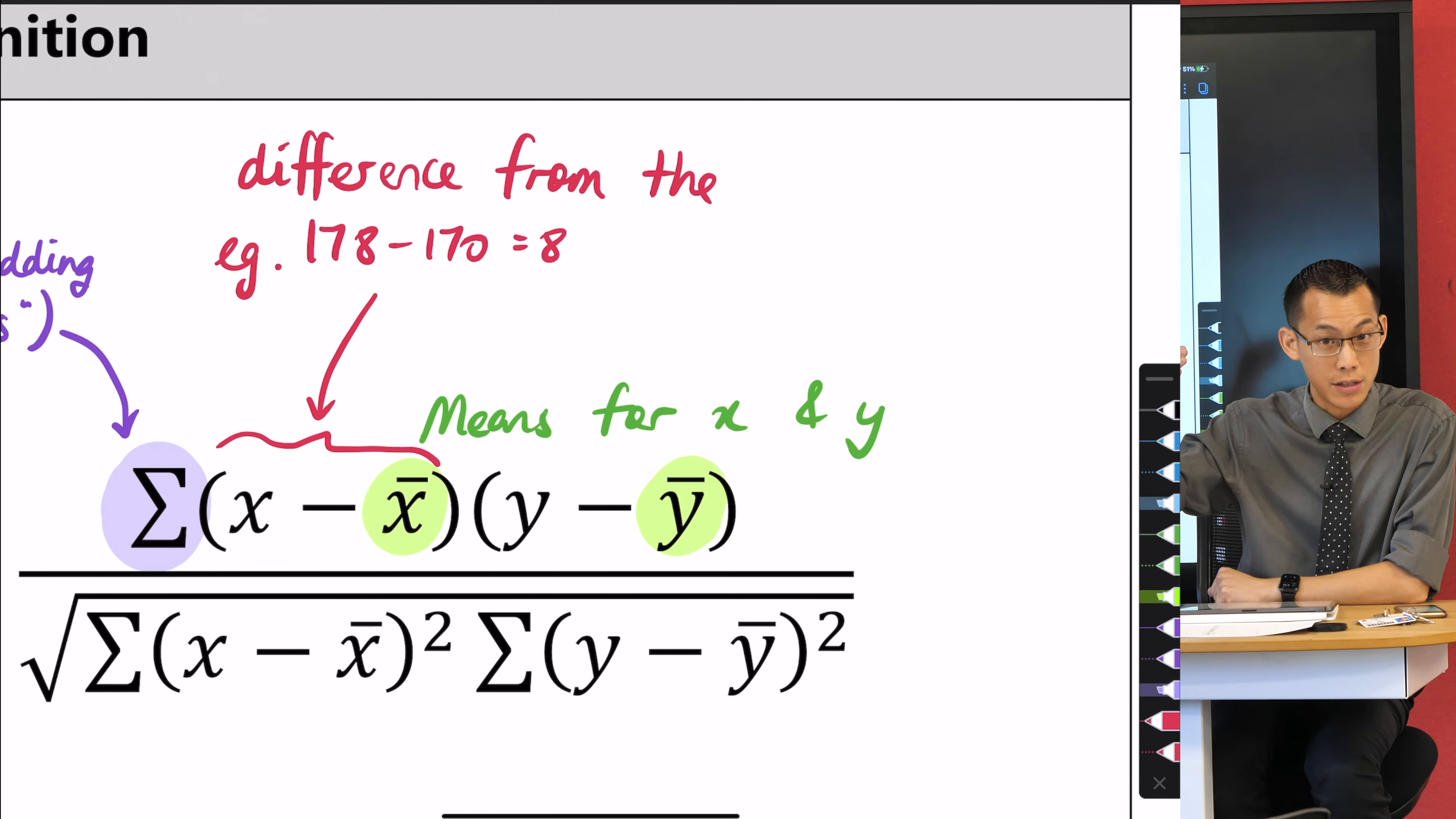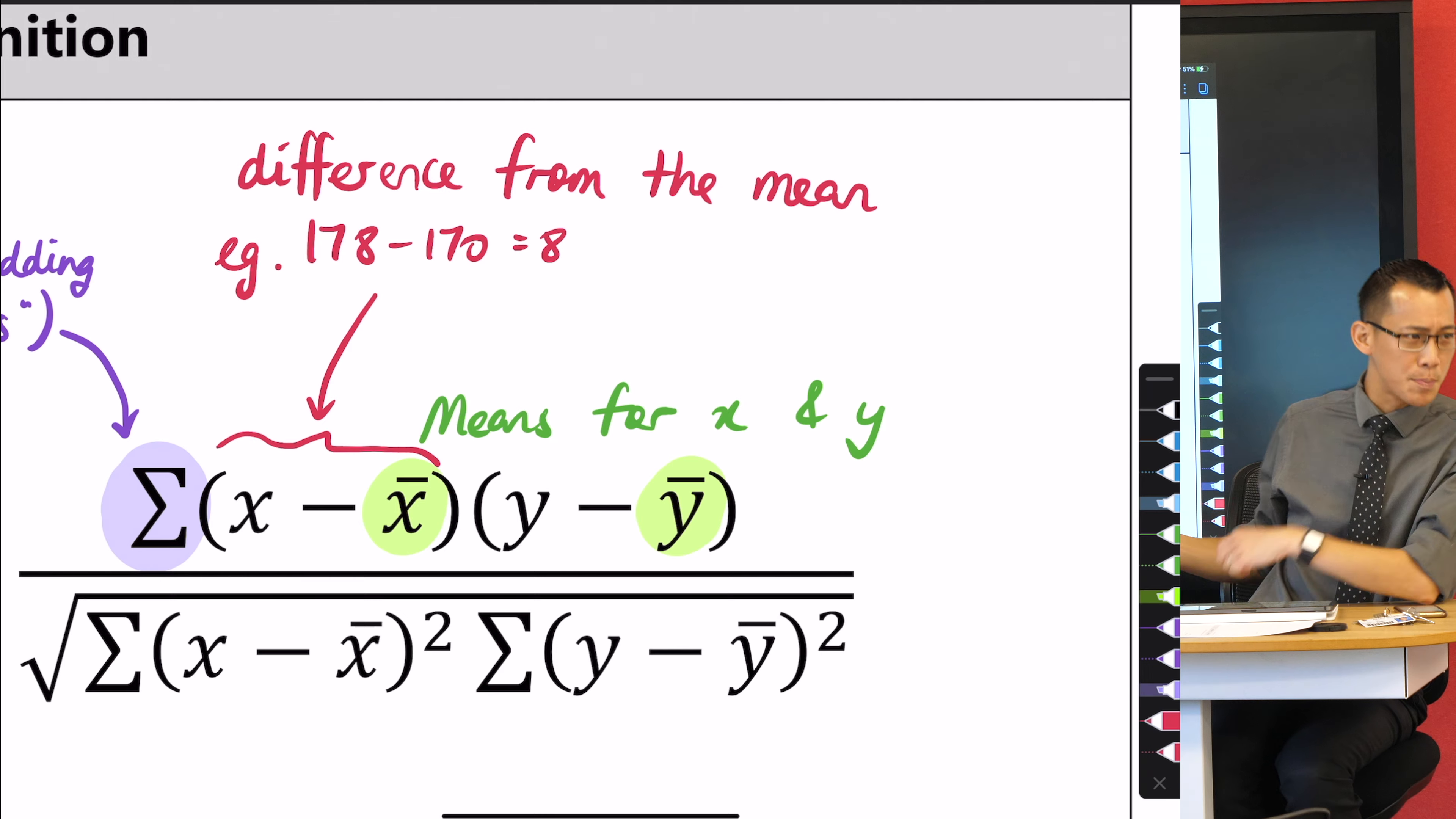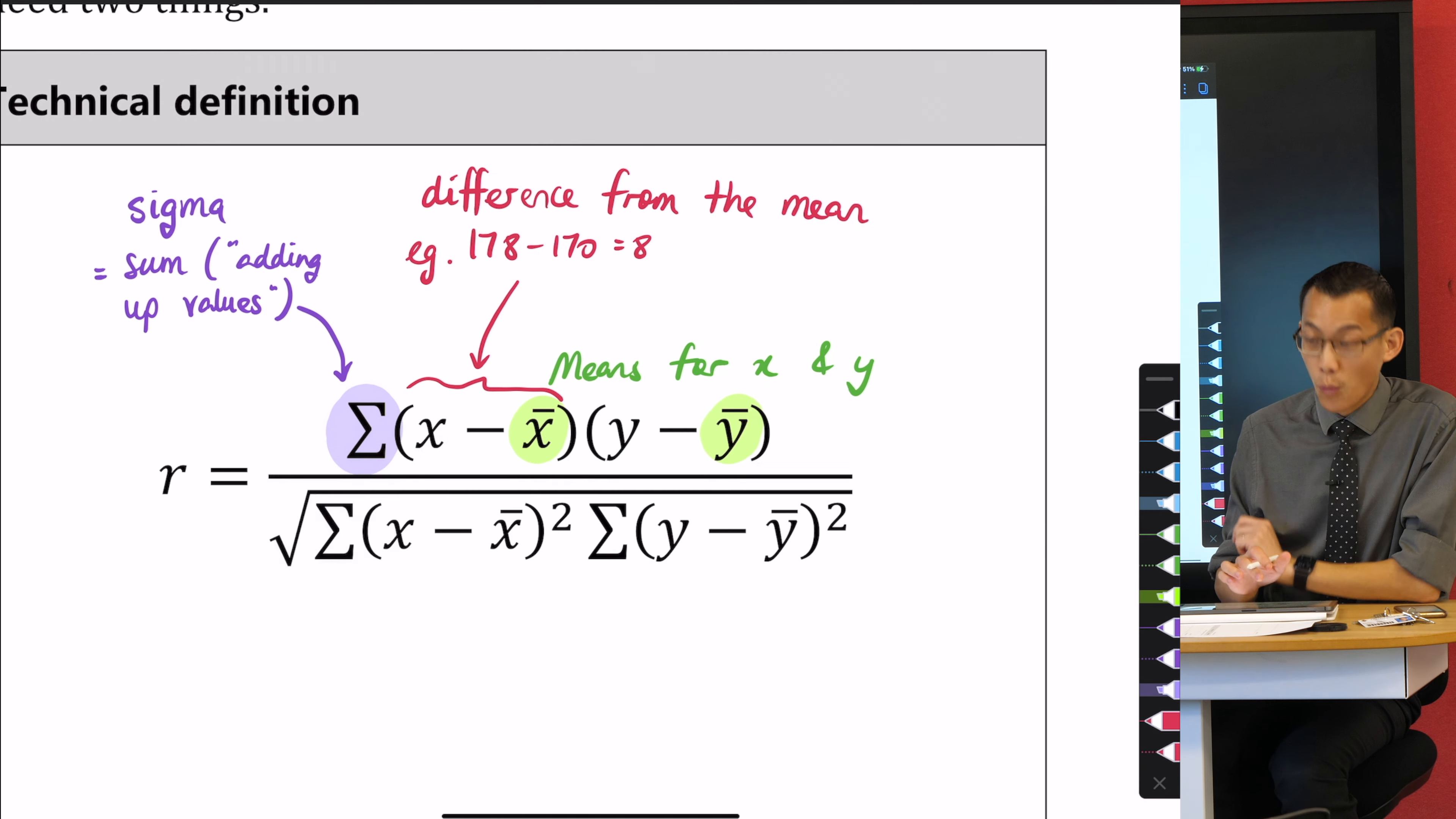I'm saying difference from the mean—it really should be differences from means, but you get the idea. It's just for each different variable. Make sense?